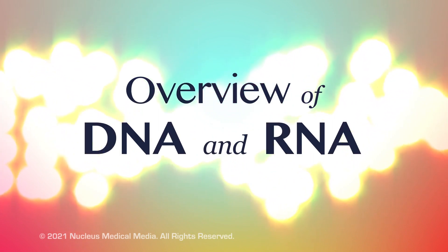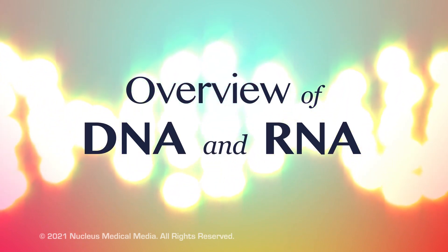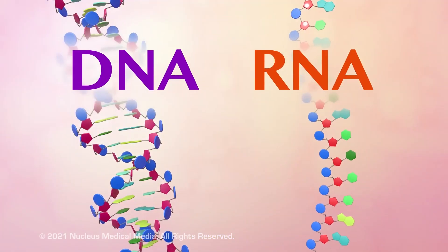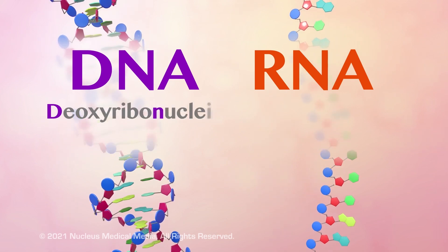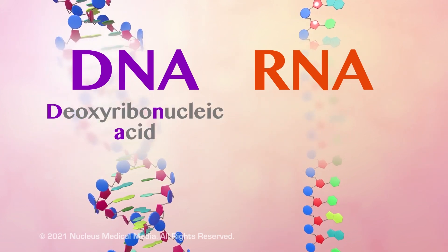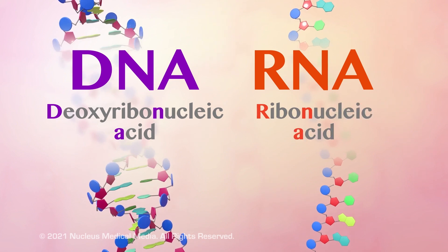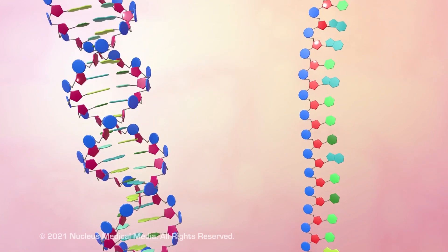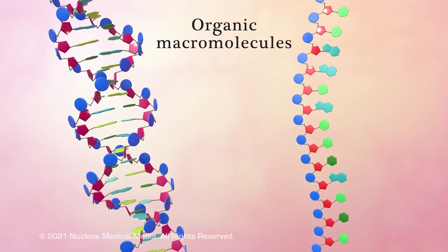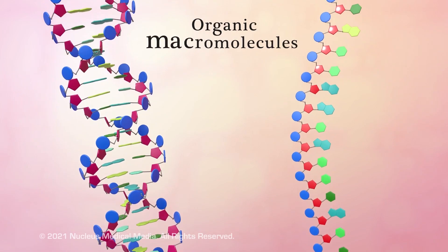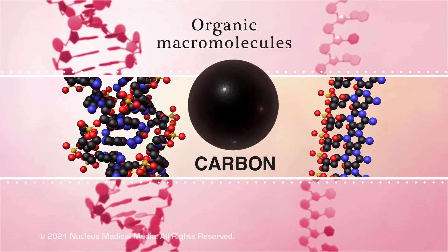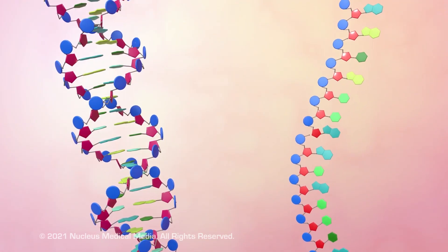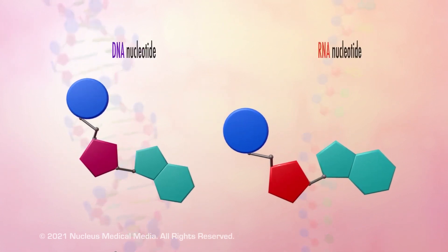Today, we're going to be talking about the only two types of nucleic acids that exist: DNA and RNA. DNA stands for deoxyribonucleic acid and RNA stands for ribonucleic acid. As nucleic acids, both DNA and RNA are long organic macromolecules — very large molecules that contain the element carbon. Both DNA and RNA are composed of nucleic acid monomers called nucleotides.